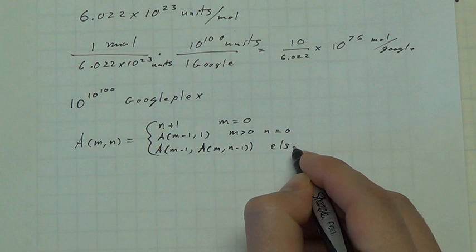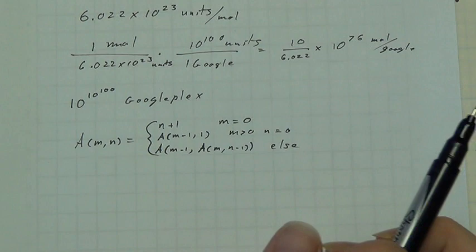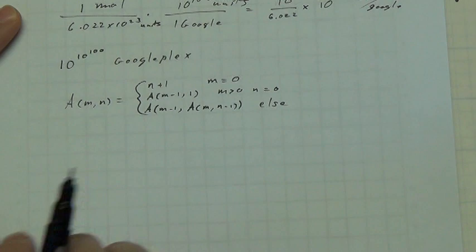these arguments that are used in the recursion are all going down, right, the m minus 1, the m minus 1, the n minus 1. So we don't get caught in a loop. We are going to cycle back and we can get an answer for any input m and n.